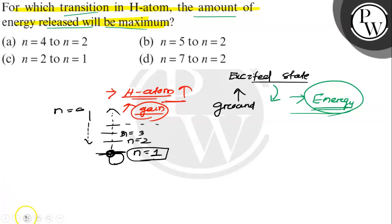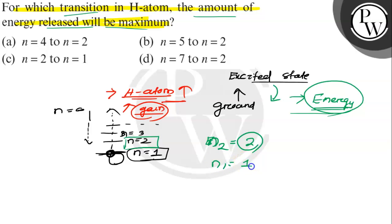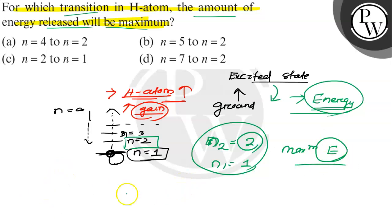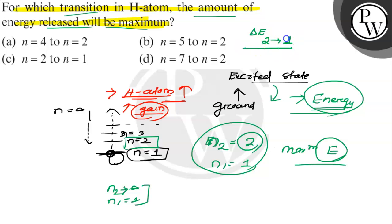The maximum energy is released when the electron jumps from the nearest excited state. That means when the electron of the hydrogen atom jumps from n2=2 to n1=1, this shows the maximum energy released. When n2=infinity to n1=1, it releases less energy. So ΔE for the 2→1 transition is greater than ΔE for the ∞→1 transition.